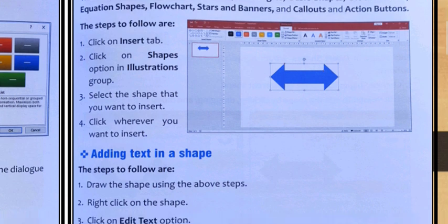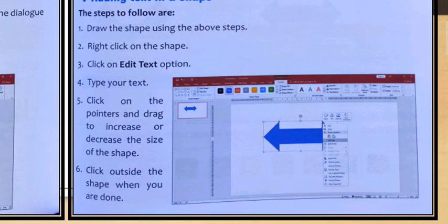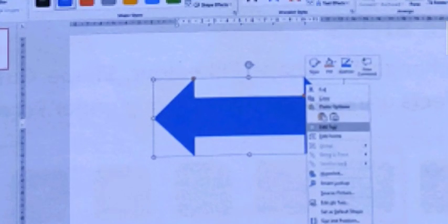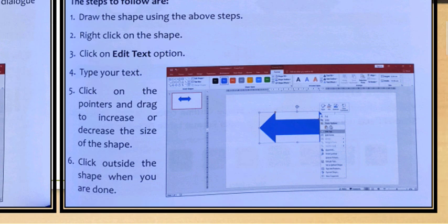Next is adding text in a shape. First, draw the shape using the above steps. Right-click on the shape and select Edit Text option. Here you can see the Edit Text option. Type your text. Click on the pointers and drag to increase or decrease the size of the shape. Click outside the shape when you are done with the text.